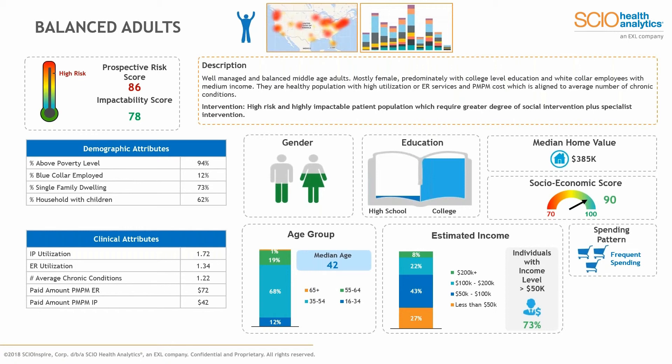Over to the left we have clinical attributes — not all of them, obviously this slide doesn't show everything — but we've got a number of clinical attributes including inpatient utilization, ER utilization, number of chronic conditions, and some dollar amounts attributable to those. We've got scores and metrics attributable to those clinical attributes. There are a lot of metrics we provide to clients that can be sliced and diced, but ultimately it rolls up to that prospective risk score and impactability score.